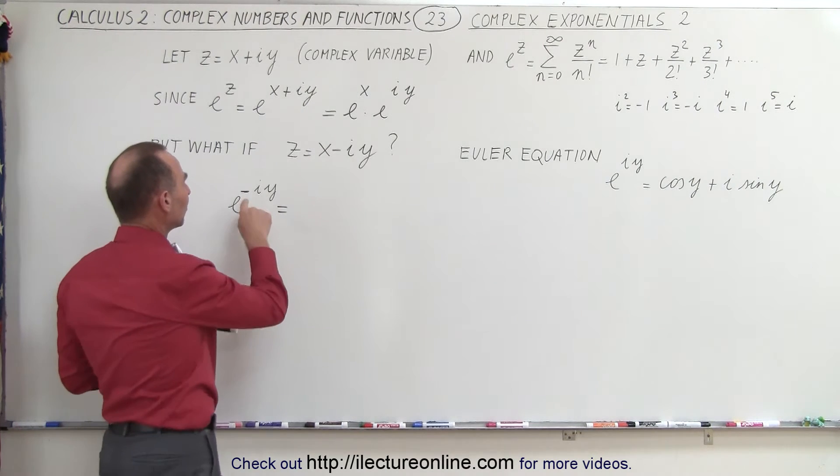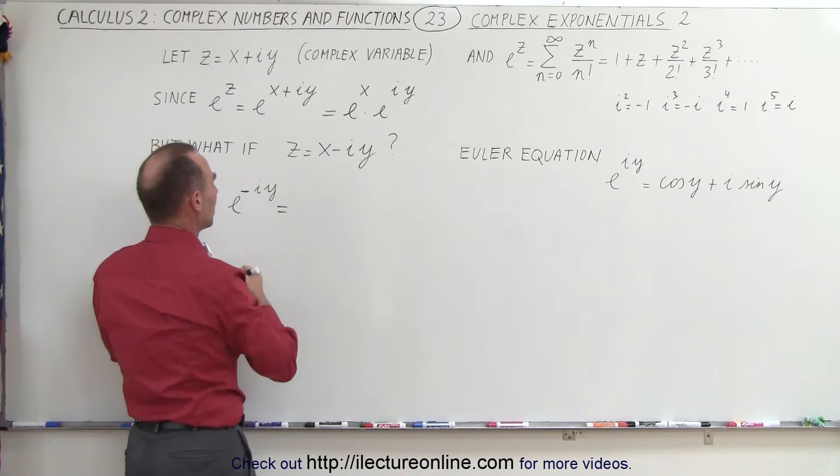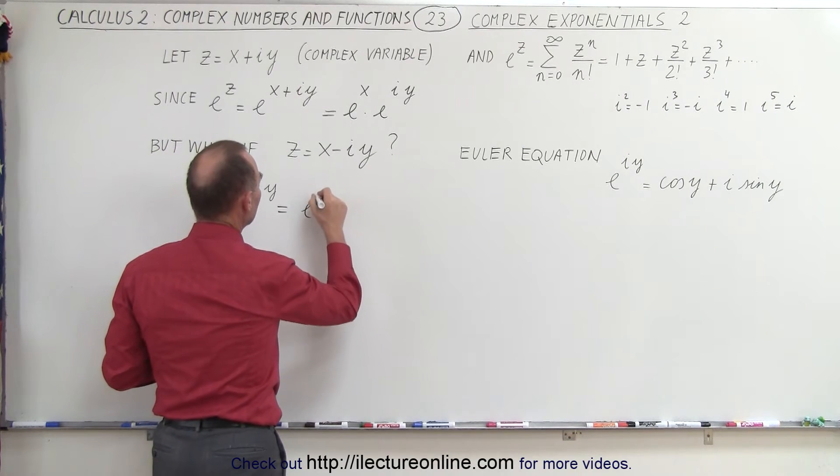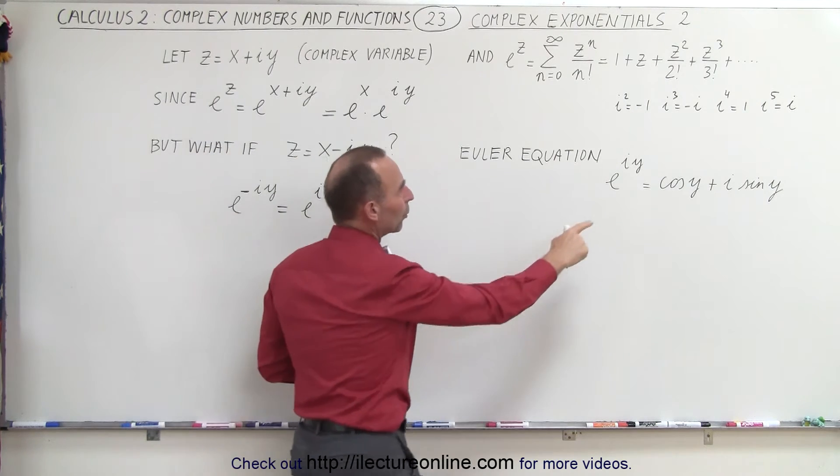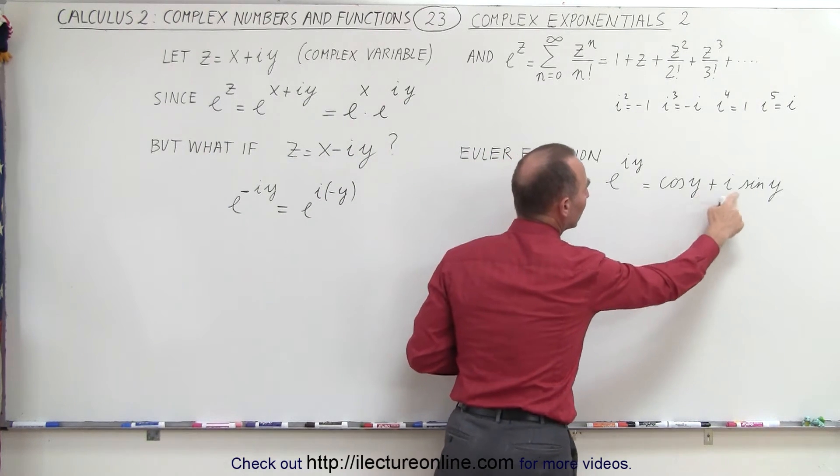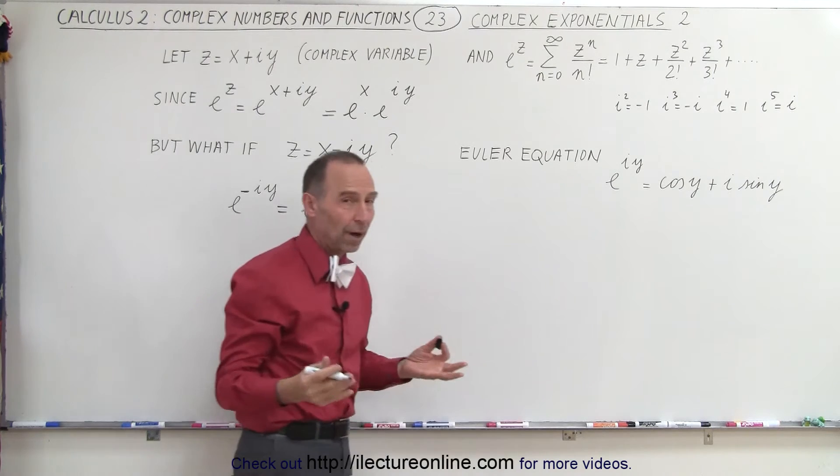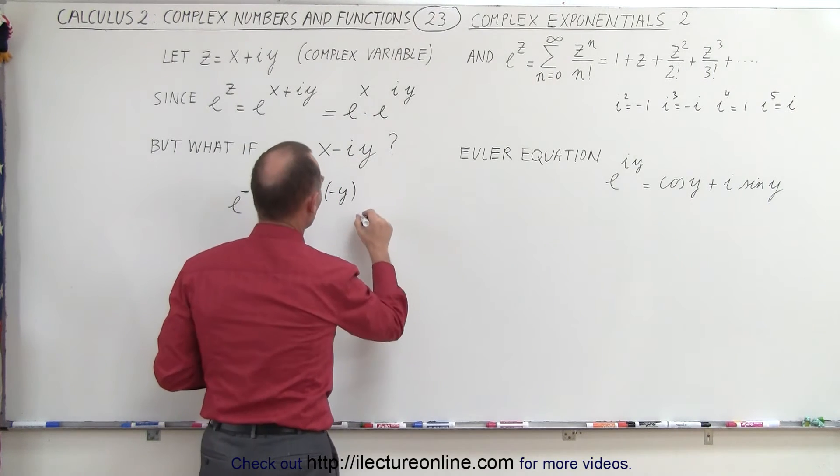Well what we can do is we can assign the negative sign to the y and rewrite it as follows: e to the i times negative y. And then we can use the Euler equation but instead of writing y in each case we can write a negative y to see what would happen.